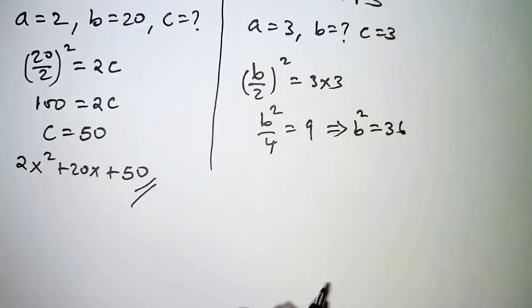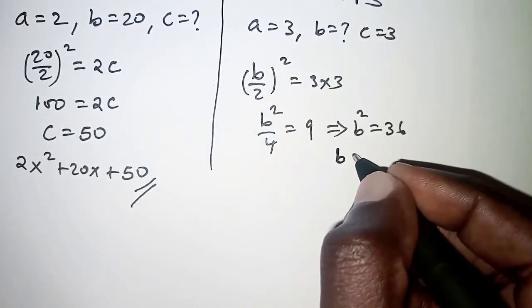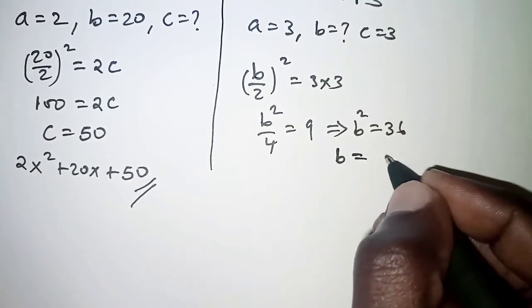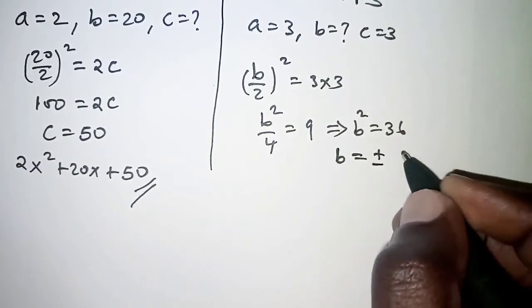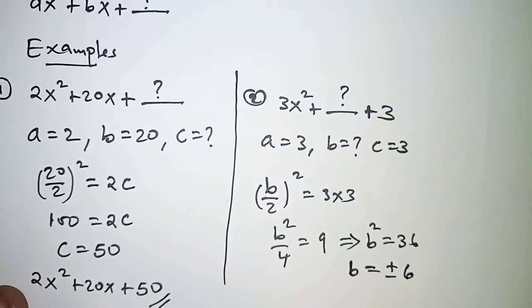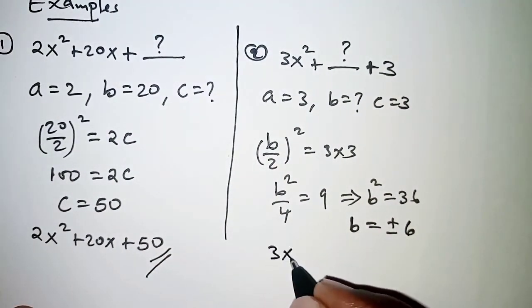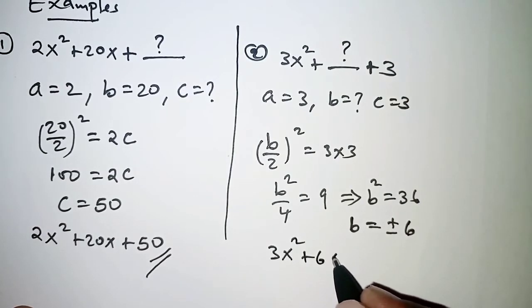Cross multiplying, and therefore the value of b is the square root, and that is ±6. And that means the expression here can be written as 3x² + 6x + 3. That is the first way.